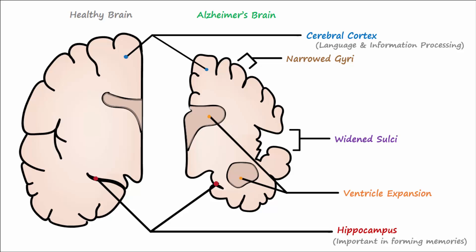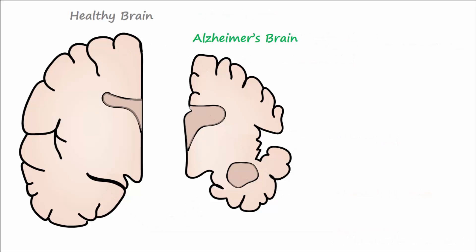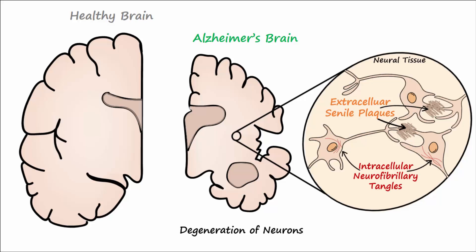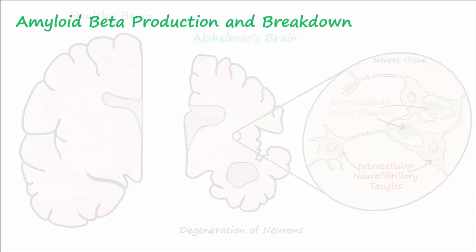These brain changes take place because of neural degeneration associated with the formation of extracellular senile plaques as well as intracellular neurofibrillary tangles. To understand how and why these plaques and tangles form, it is first important to know how amyloid beta is produced and broken down in the brain.